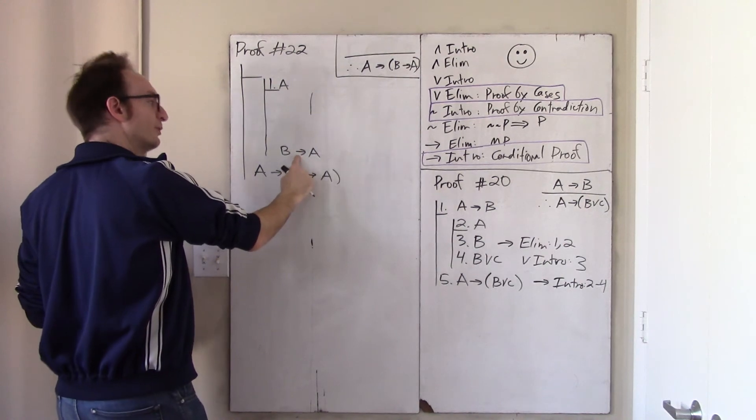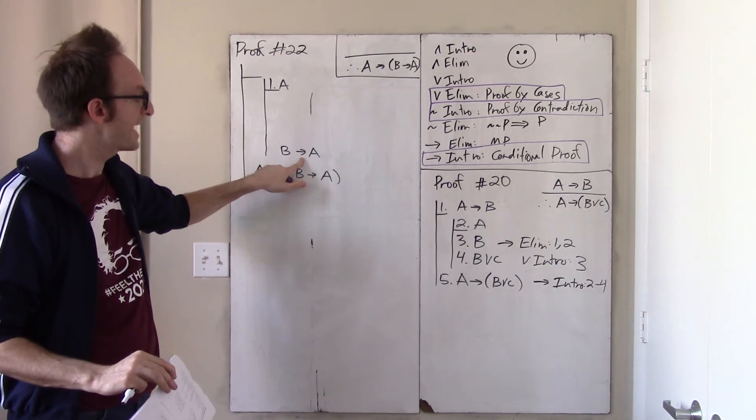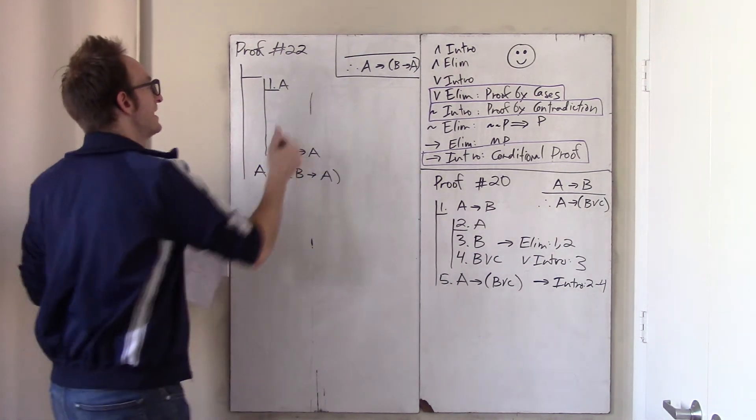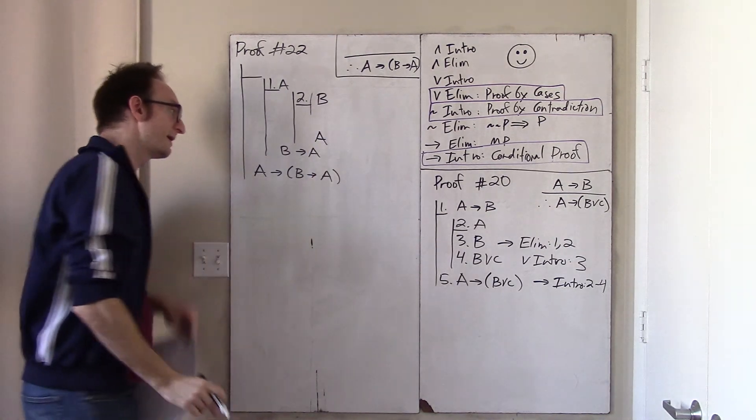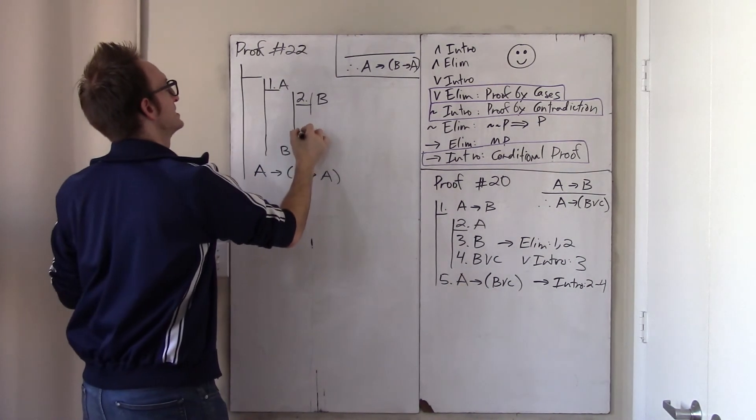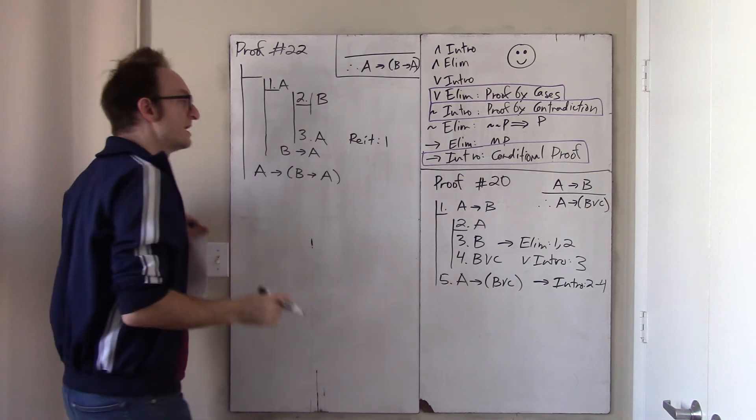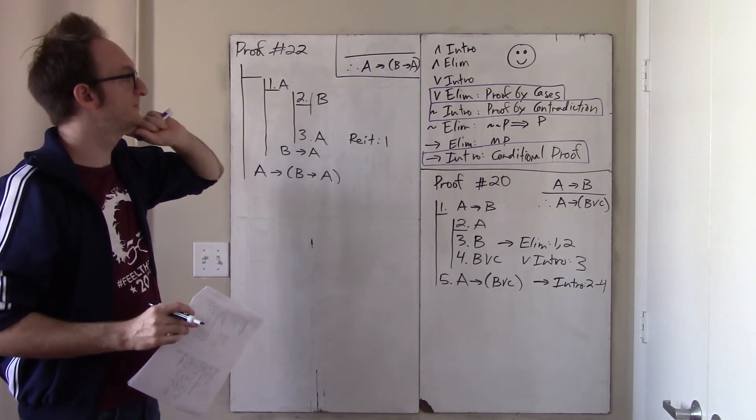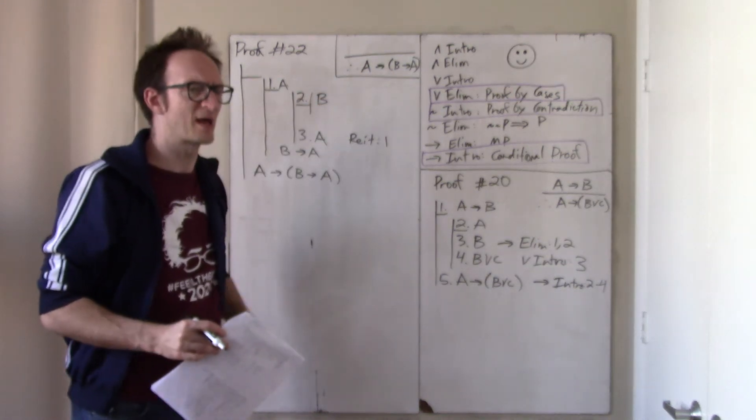I need to assume B, and I need to derive A. And now you realize that I just have A already right there. And so, in fact, I'm just done. Because line three holds by reiteration from line one. Now, okay, this is maybe sort of strange. I didn't actually talk about this proposition before starting. It does seem strange to say, perhaps, that if A then, if B then A, seems kind of weird. So, well, maybe I won't say anything.